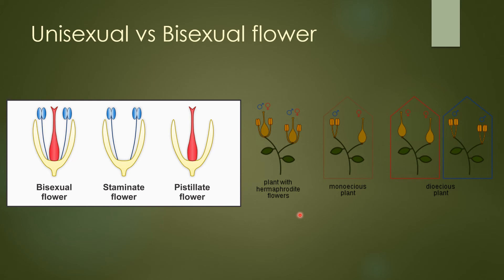If both the male and the female unisexual flowers are present on a common plant, it is known as a monoecious plant. In one branch there is the male flower and in another branch the female flower. This is different from a bisexual flower plant because in bisexual flowers, both male and female parts are in the same flower, whereas in monoecious plants the flowers are unisexual but present on the same plant.